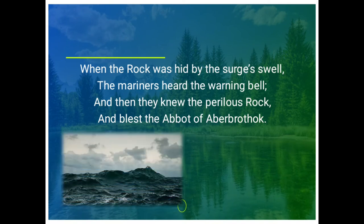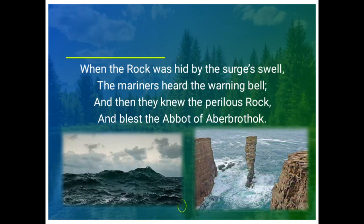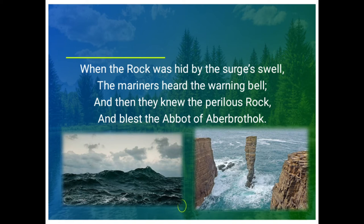In the fourth stanza, the poet describes the utility of the bell. 'When the rock was hid by the surge swell, the mariners heard the warning bell, and then they knew the perilous rock and blessed the abbot of Aberbrothock.' The seamen could not see the rock as it stayed hidden under the high waves during storms, but they could hear the bell ringing and moved away from the dangerous rock. The bell saved their lives, and the mariners blessed the abbot for his noble deed. 'Surge swell' is a sudden and great rise in the level of the sea.